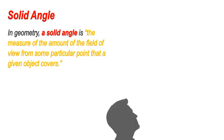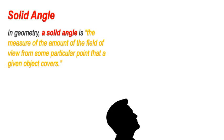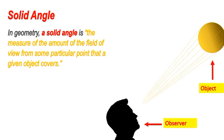For example, this is an observer and this is an object. The amount of field of view of this object on the eye of observer is this much. This amount of field of view is called as the solid angle.